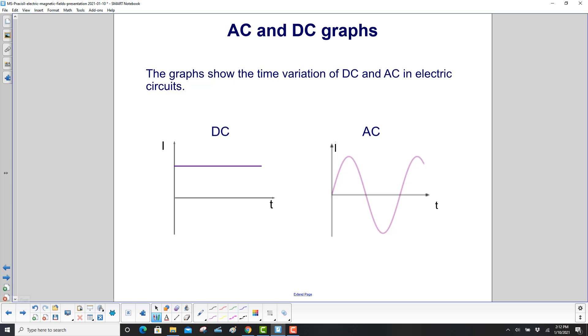The two graphs show the time variation of DC and AC in electric circuits. Here's time in both cases and here's current. DC is constant and always flows in the same direction. AC is constantly changing, gets to a maximum, zero, minimum, and it keeps oscillating like that.